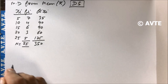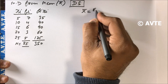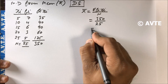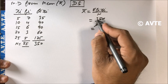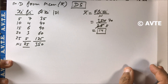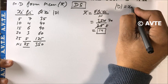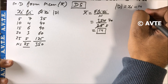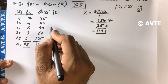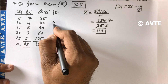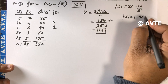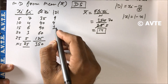Capital N is 25. We find the mean: for discrete series, mean is sigma fi·xi upon capital N, that is 350 upon 25, which equals 14. Now we find mod D, which is xi minus mean, and here mean is 14. Subtracting 14 from each xi: 15−14=1, 10−14=4, 5−14=9, 20−14=6, 25−14=11. Remember, the absolute value of any number is always positive.